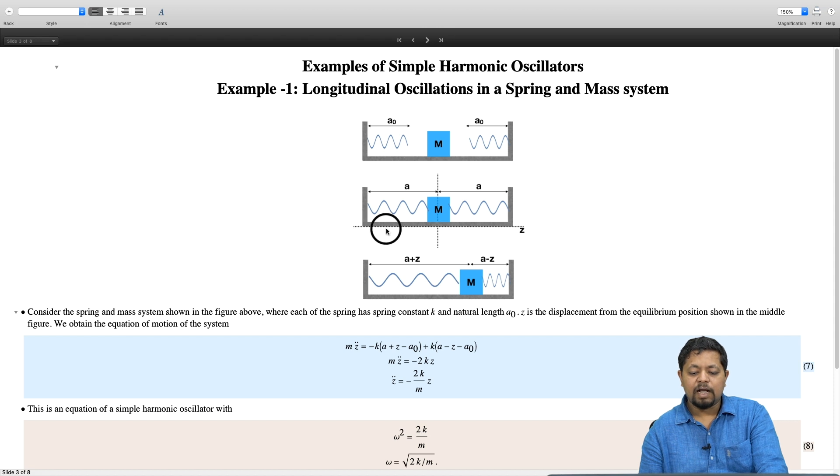Now, as I move the mass to one side, let us say I move it to the right as shown in this picture over here. Let us say it shifts by a distance z, then the length of this spring becomes A minus z and length of this spring becomes A plus z.